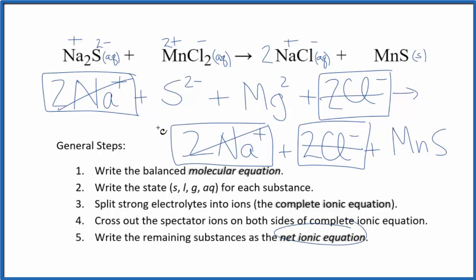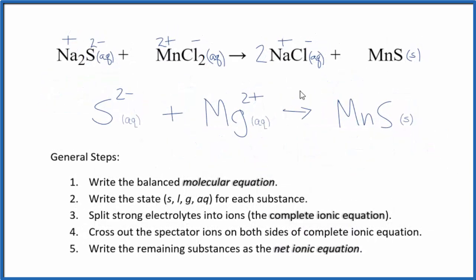I'll clean this up and write the states in, and we'll have our net ionic equation. And this is the balanced net ionic equation for sodium sulfide plus manganese 2 chloride. Sometimes you'll see the positive ion written first. It doesn't really matter. It's the same equation. If you notice, the charge is balanced. We have 2 plus and 2 minus. So this is neutral over here. This is neutral.